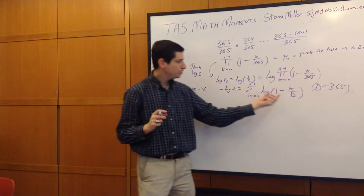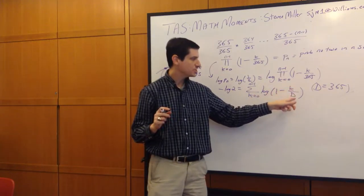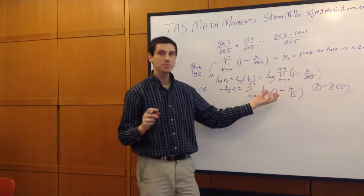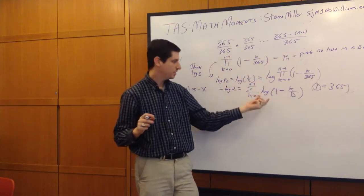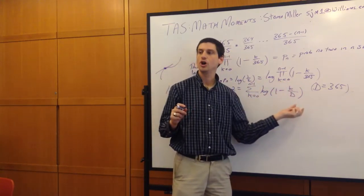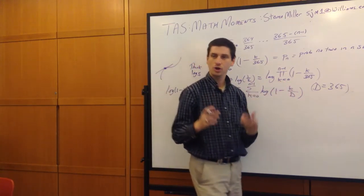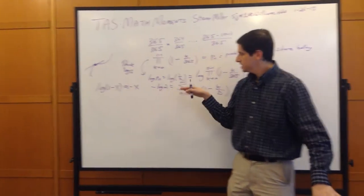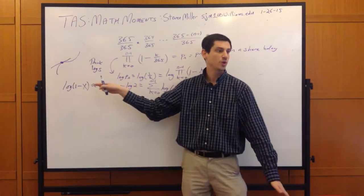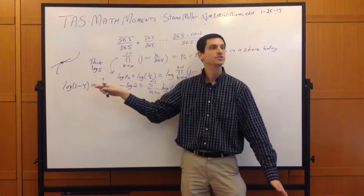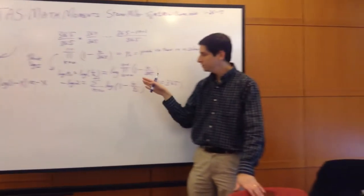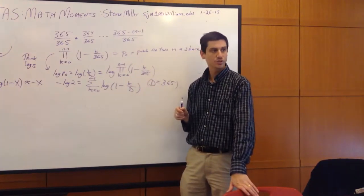Why is this approximation good for our logarithm? We expect k to be very small relative to d, so k over d is small. The log is approximately the log of 1, which is 0, so the next term — the x-squared term — is going to be much smaller. This should give us a pretty good picture of what's going on.